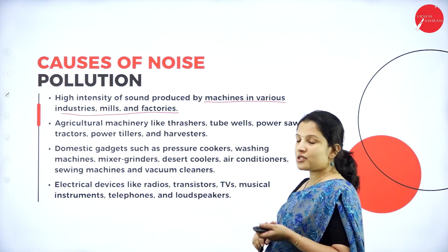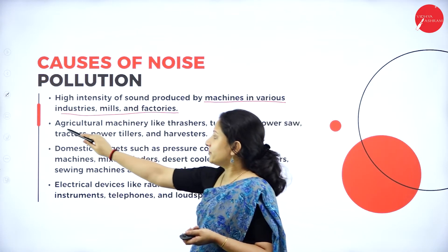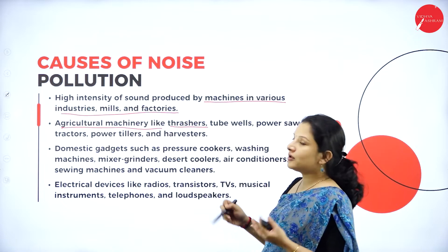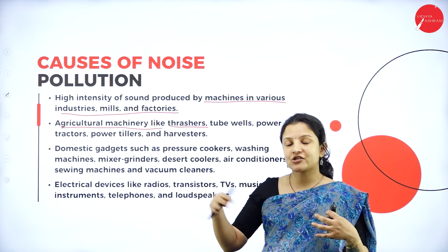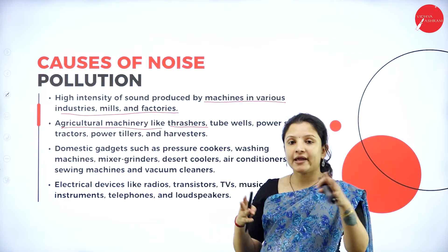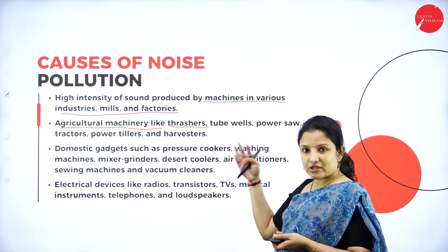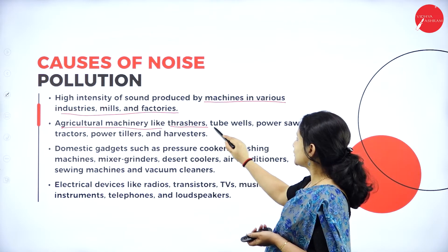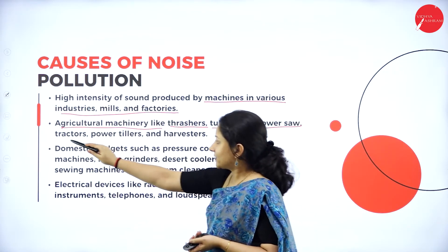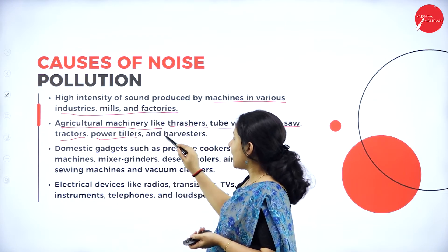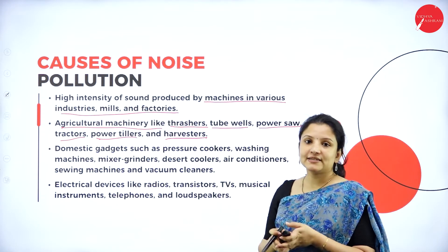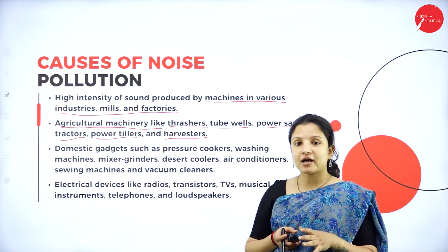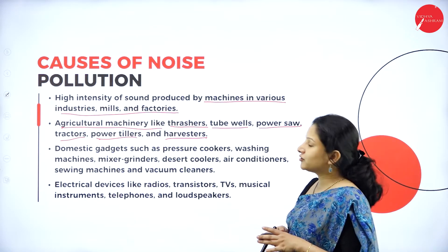Some agricultural machineries such as thrashers — used in paddy and wheat fields after harvest to separate hay and grains — can also cause noise pollution. Other agricultural machinery including tube wells, power saws, tractors, power tillers, and harvesters all used during harvesting can cause noise pollution.